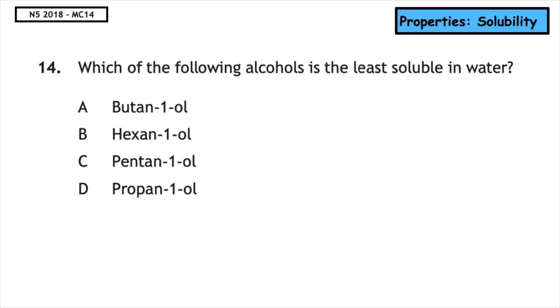This past paper question is from the National 5 2018 multiple choice. Which of the following alcohols is the least soluble in water? Remember, as we increase the carbon chain length, the less soluble in water it becomes. Butan has four carbons, hexan has six carbons, pentan has five, and propan has three. The correct answer is the one with the most carbon atoms, so the answer is B.